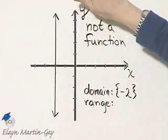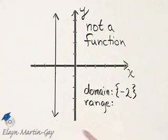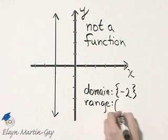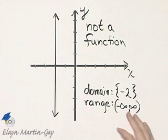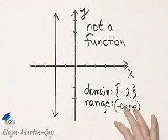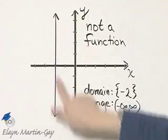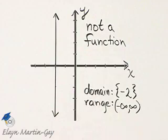Notice this graph goes to positive infinity and negative infinity talking about y values. So the range is from negative infinity to infinity. All of these y values can be found as y values of ordered pairs on this line.